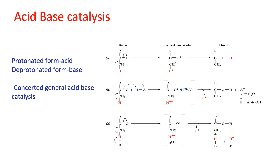Keto-enol tautomerization is a good example of acid-base catalysis. The first reaction is an uncatalyzed reaction where the keto form is converted into the enol form through the formation of a transition state — a carbonyl-like structure which is a high energy form — and the reaction takes place very slowly. In reaction B, acid HA donates its proton to oxygen, leading to a modified transition state with less carbonyl character.